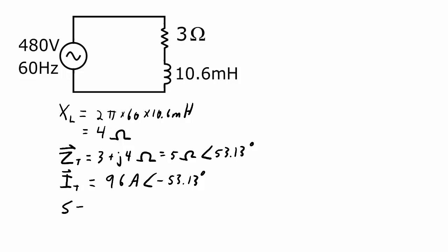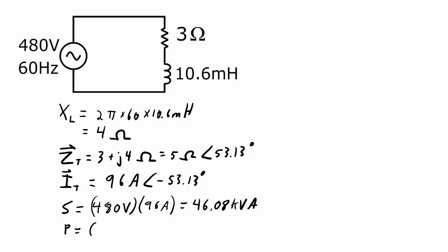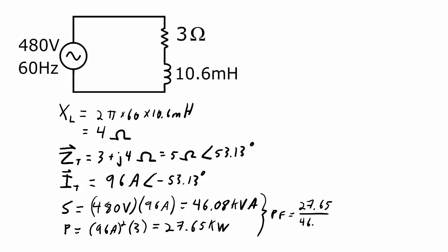The apparent power doesn't care about the phase angle — I just need the RMS values for voltage and current. The RMS voltage is 480 volts, the RMS current is 96 amps, and that works out to 46.08 kVA. The real power consumed by the resistor is the current squared times the resistance of 3 ohms, which works out to 27.65 kW. Combining those two numbers gives the power factor P over S: 27.65 divided by 46.08 gives a power factor of 0.6.